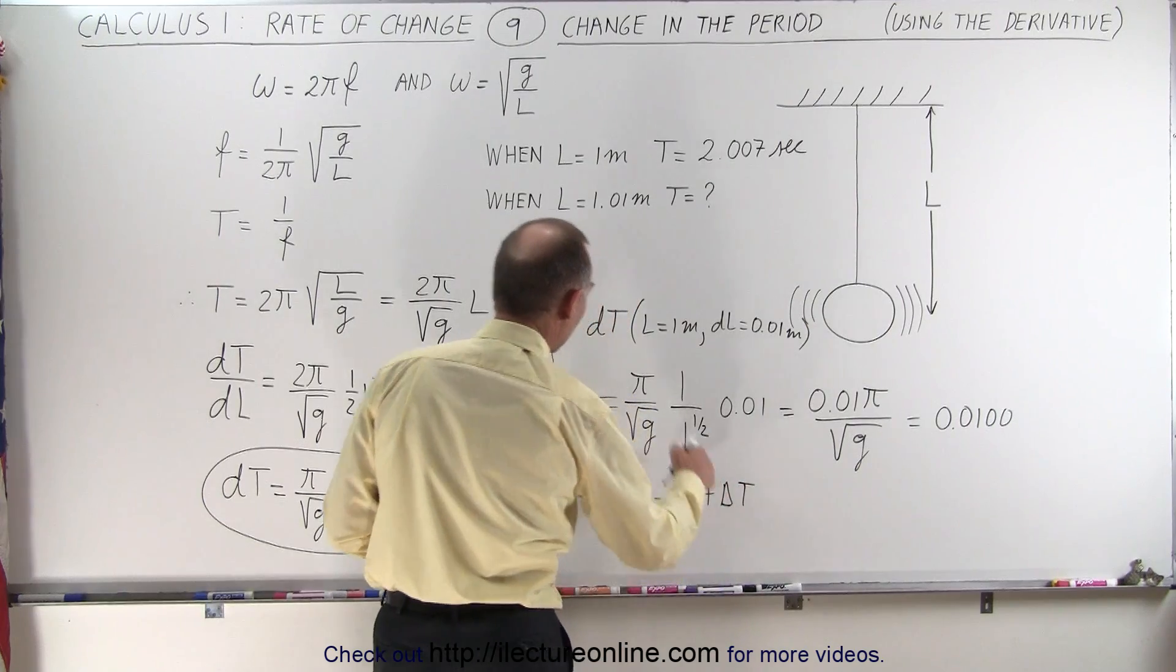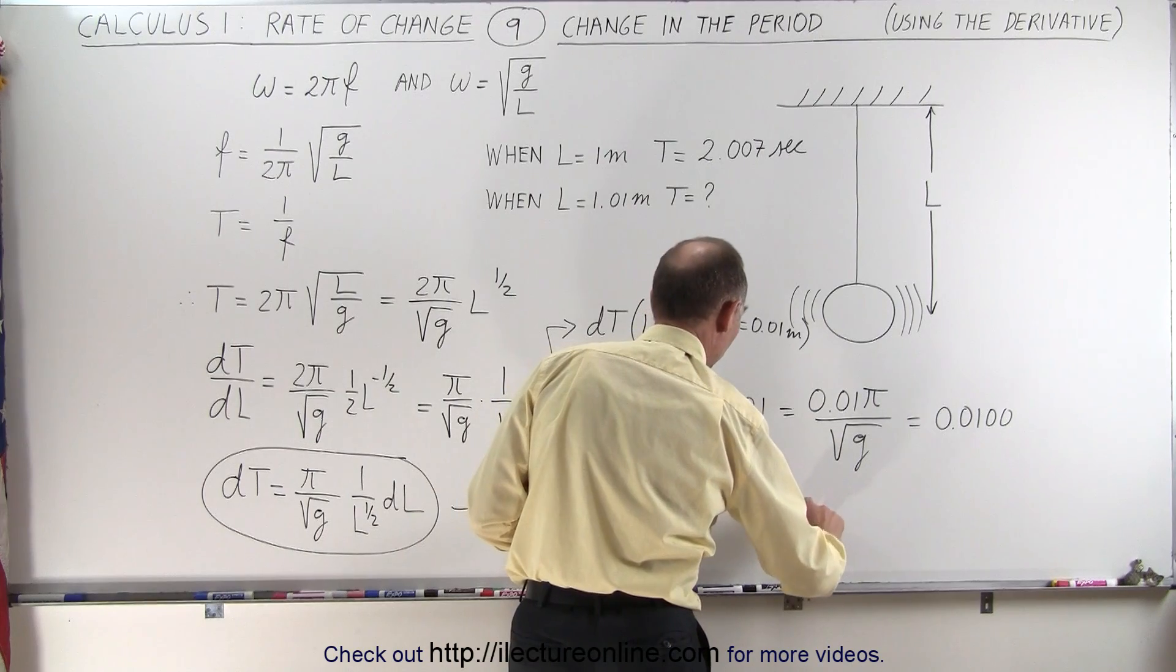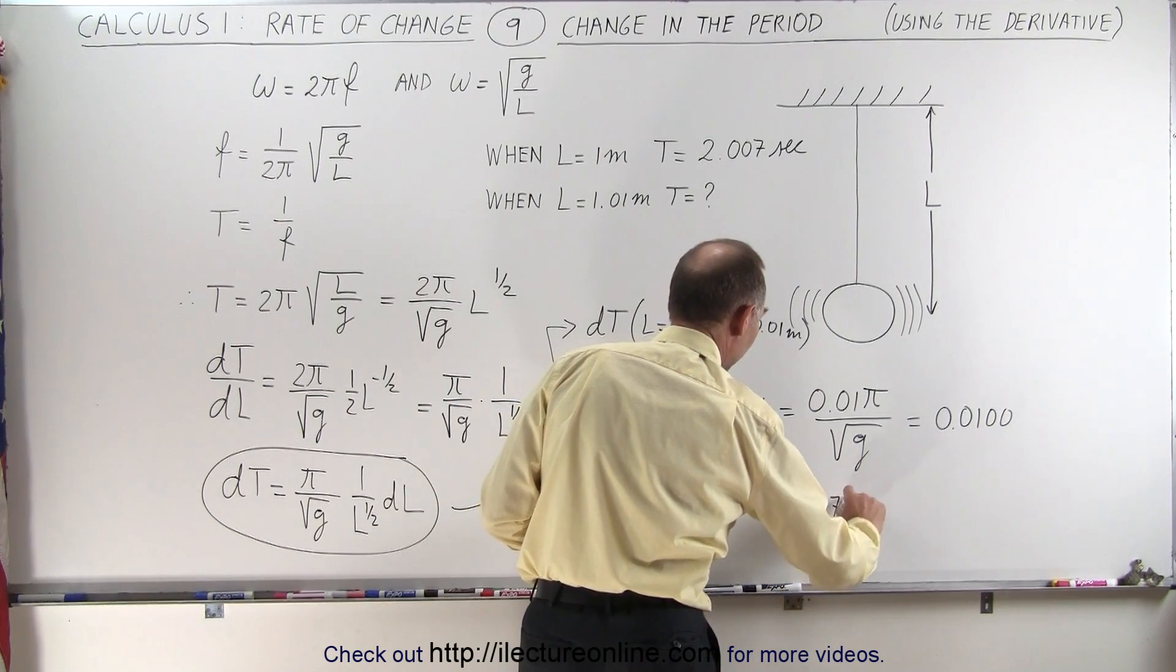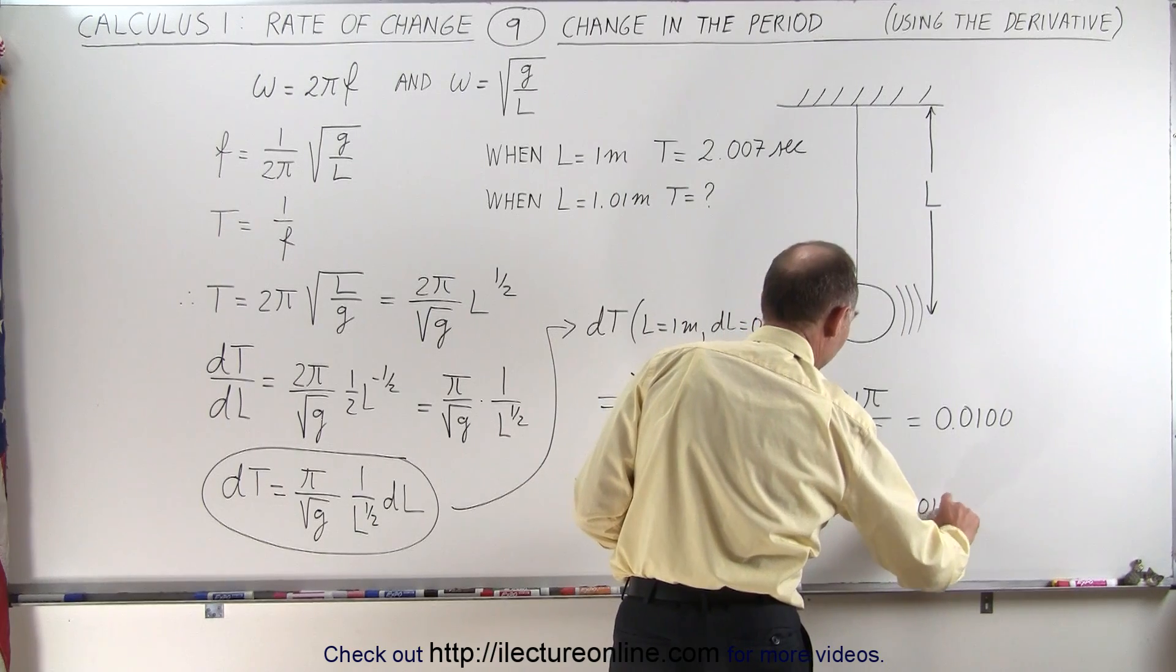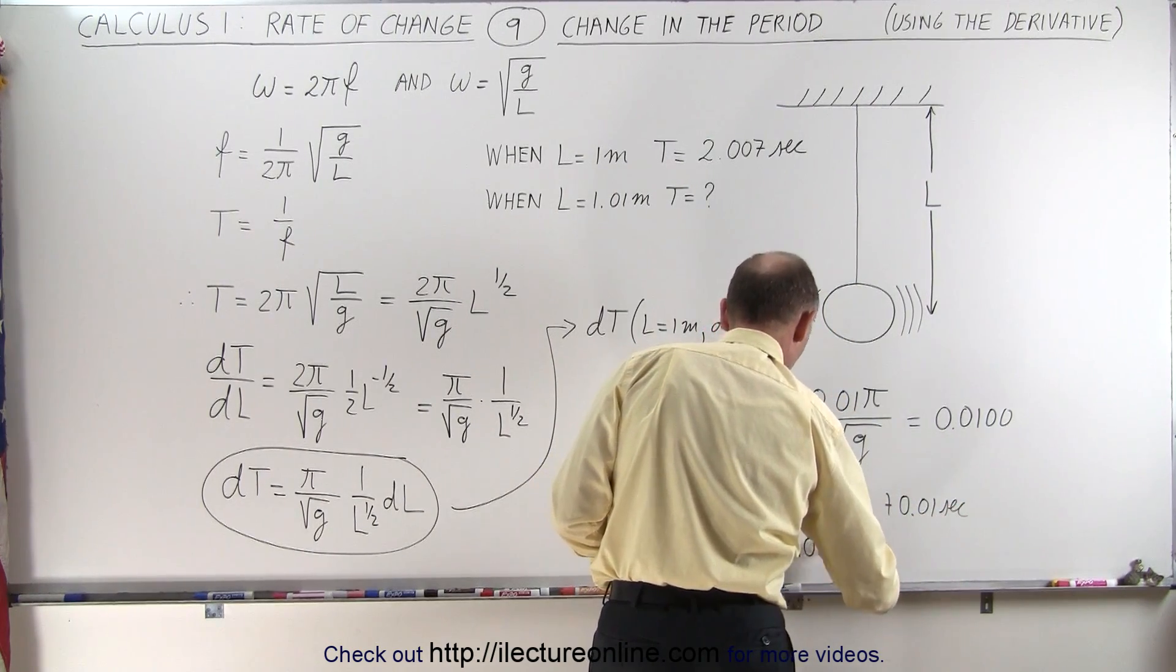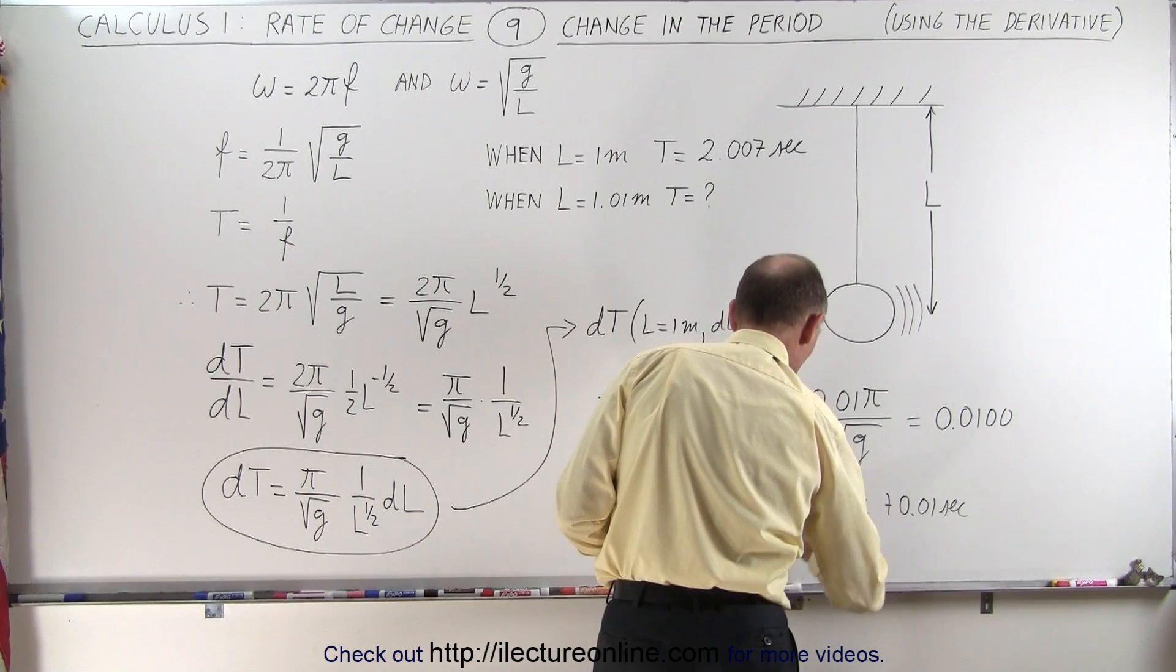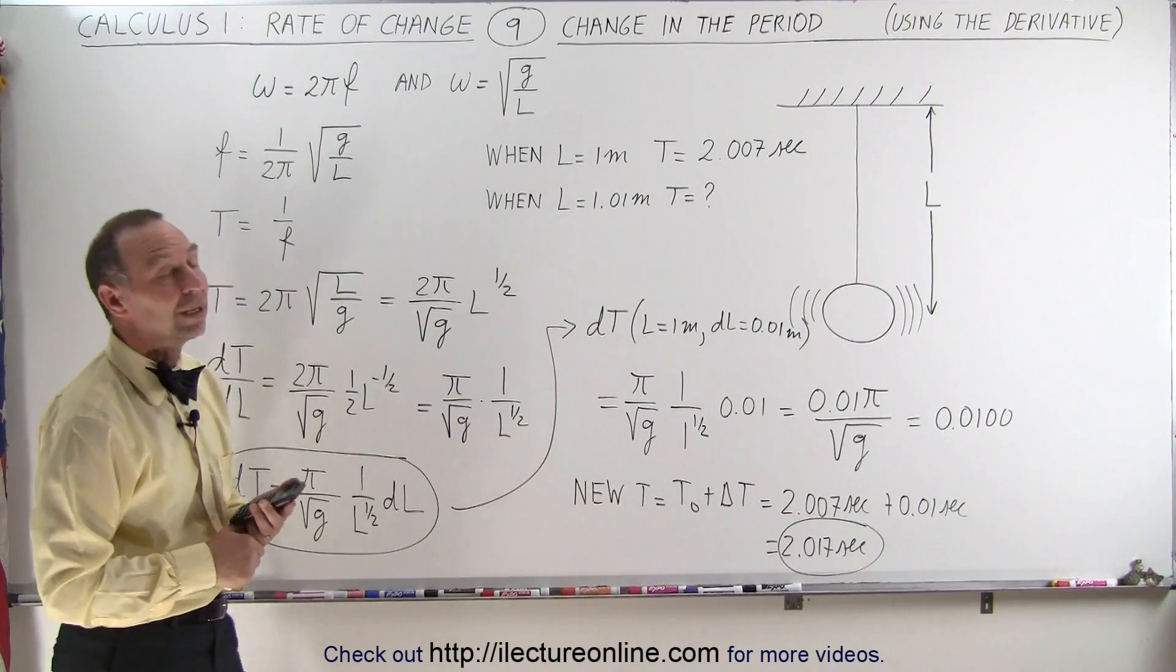So this is equal to 2.007 seconds plus 0.01 seconds. Notice that this is going to be 2.017 seconds. That's going to be the new period of our pendulum by extending the pendulum by 1 centimeter.